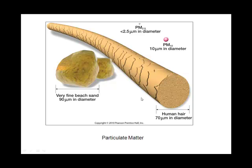To put particulate sizes in perspective: a grain of sand is about 90 microns, human hair diameter is about 70 microns, a piece of dust might be 10 microns, and then there's the less than 2.5 microns range — that is where we get to the size that can be harmful as it interacts with our lung tissue. We use the convention PM 2.5 for that particle size.